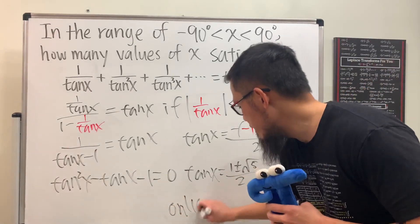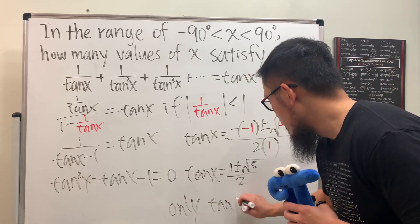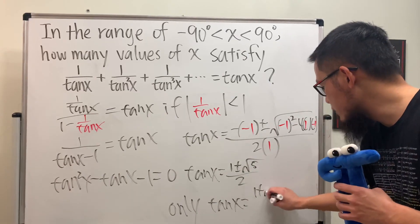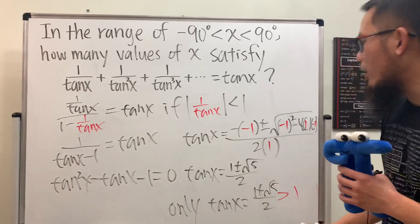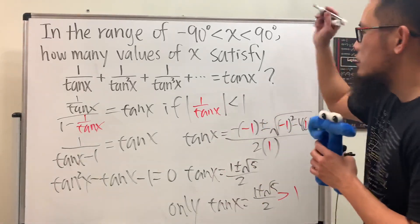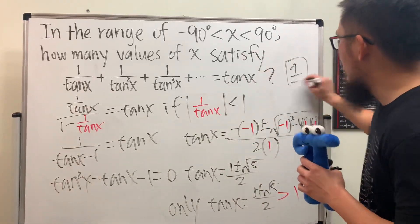So we actually just need tangent x to be the golden ratio of 1 plus square root of 5 over 2, because this right here is the only one that will be greater than 1. That's the only one that will be true. So the answer is just equal to 1, and we are done.